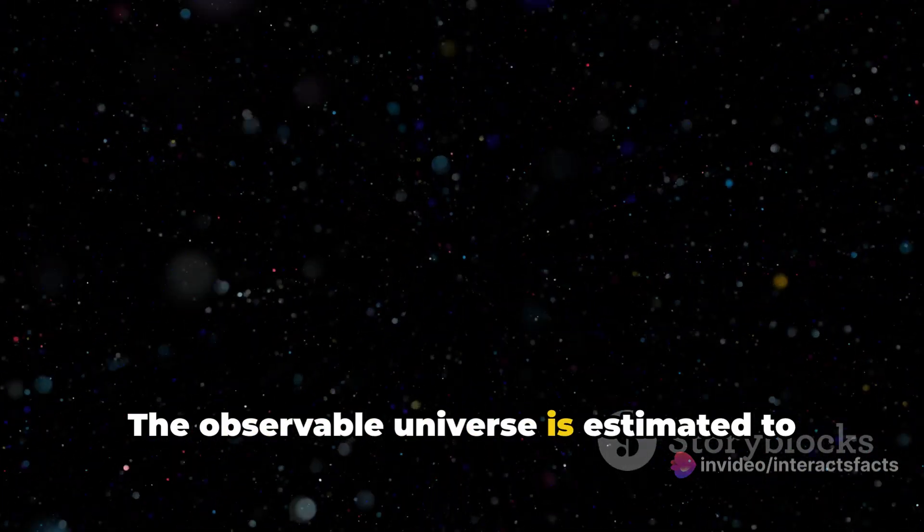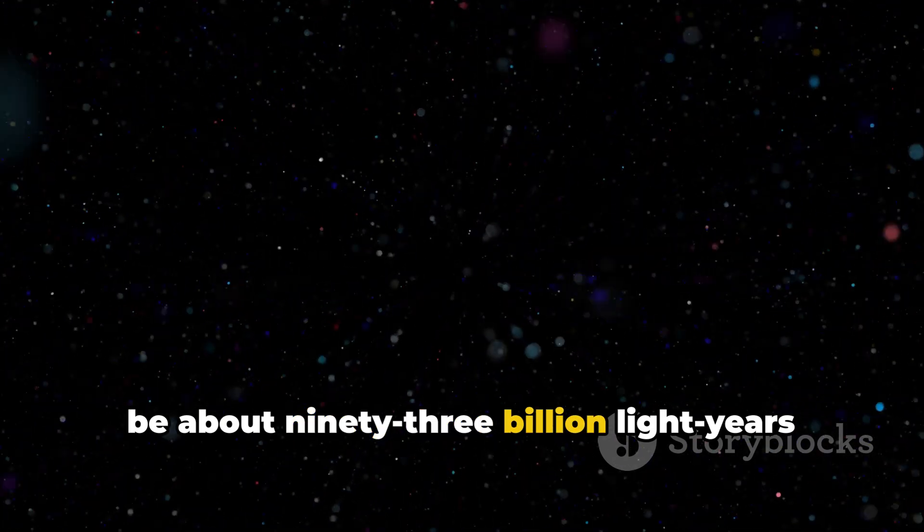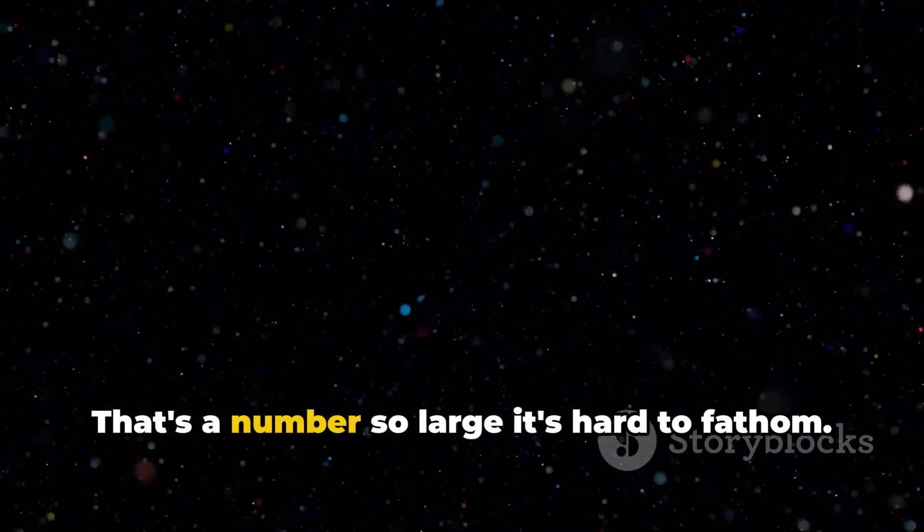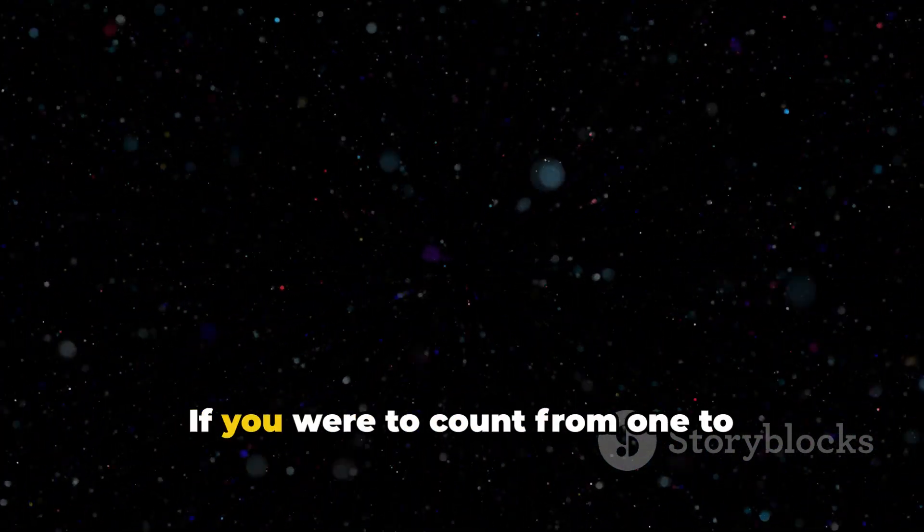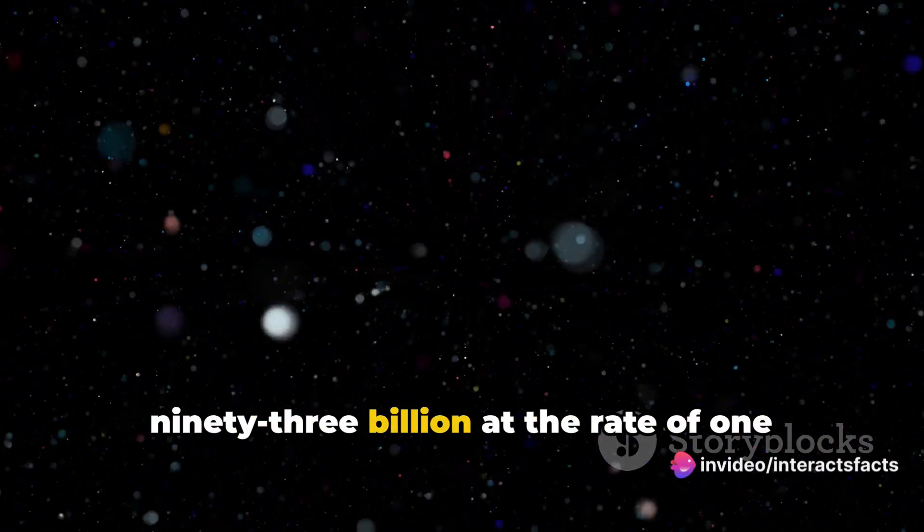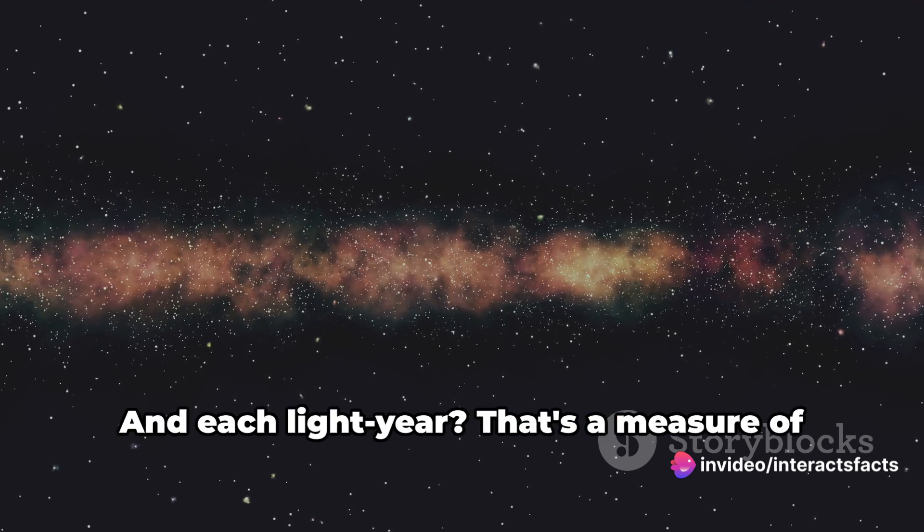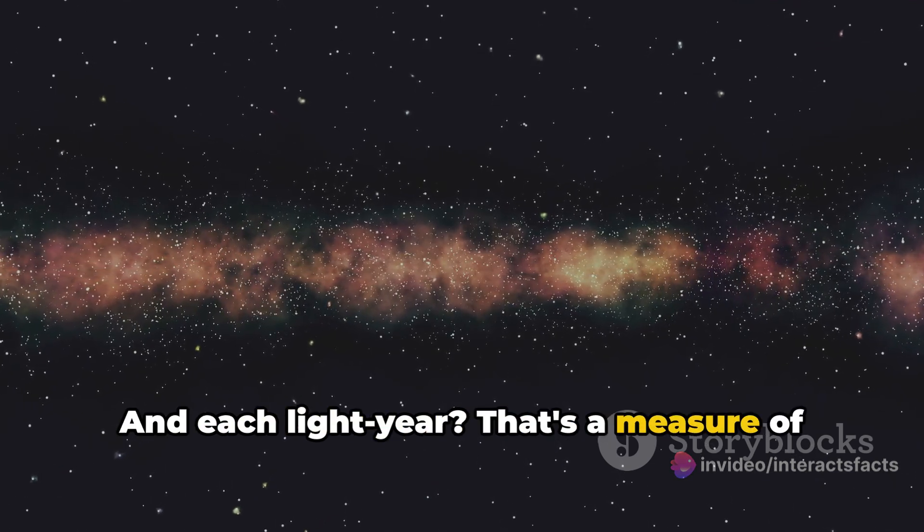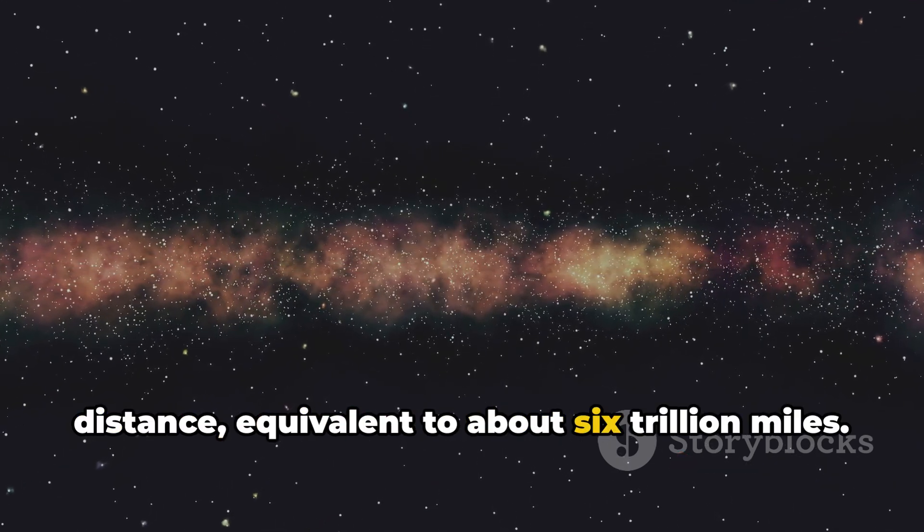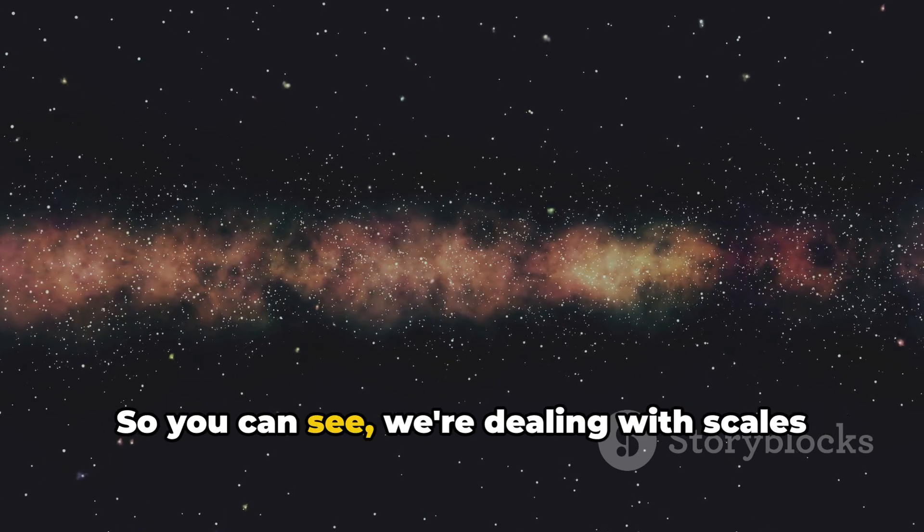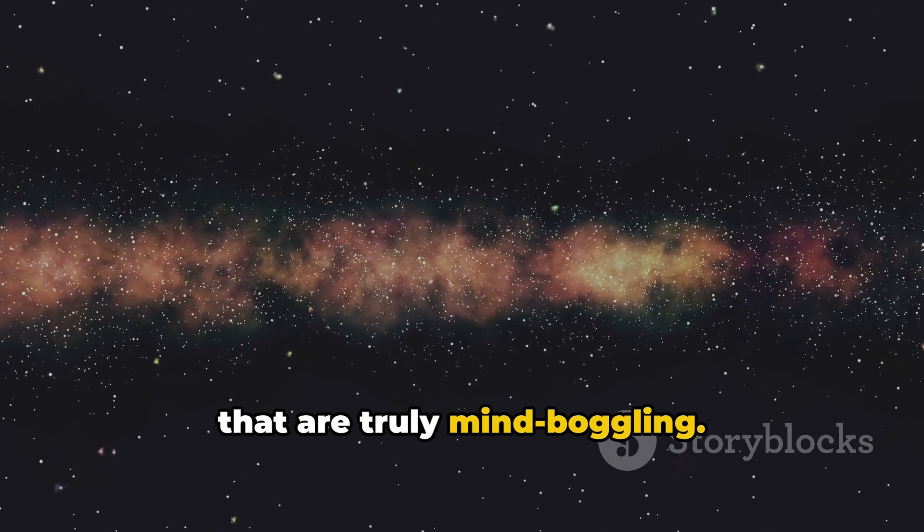The observable universe is estimated to be about 93 billion light years in diameter. That's a number so large it's hard to fathom. If you were to count from one to 93 billion at the rate of one number per second, it would take you nearly 3000 years. And each light year is a measure of distance, equivalent to about 6 trillion miles. So you can see we're dealing with scales that are truly mind-boggling.